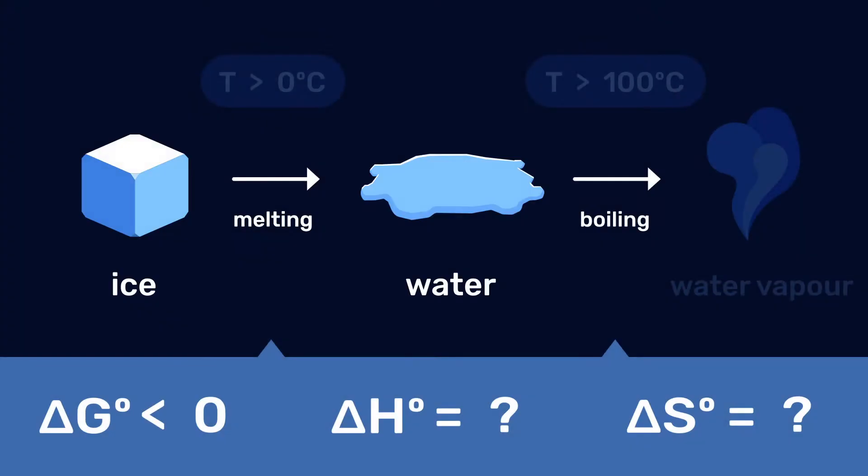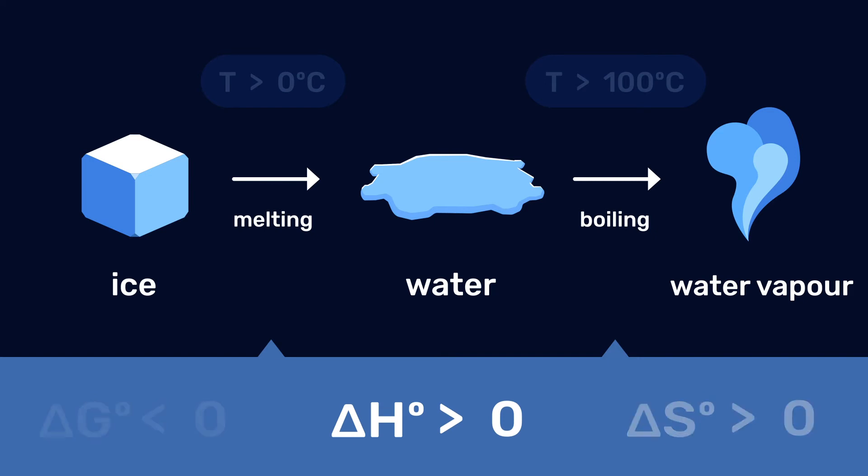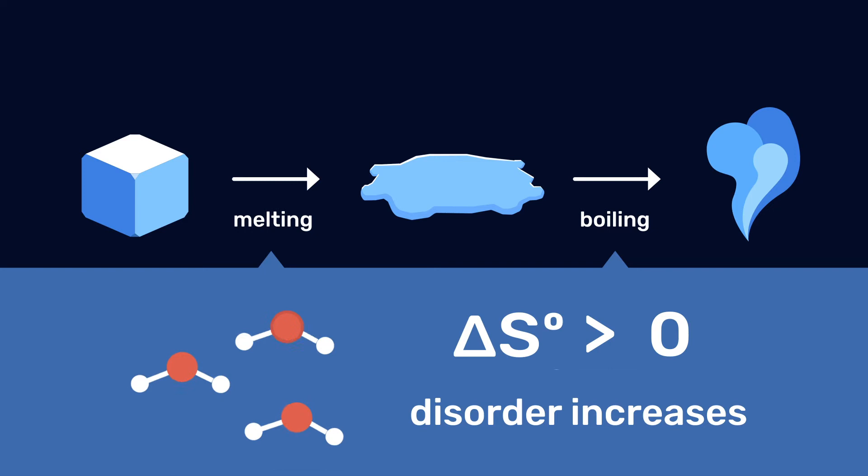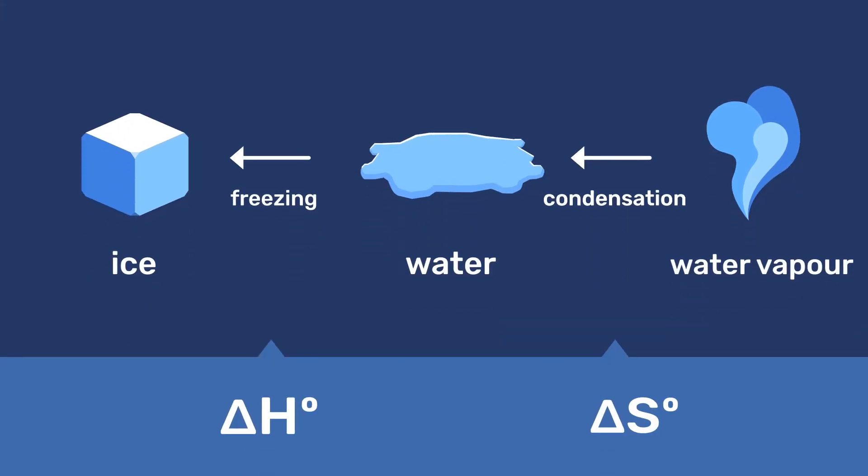For the melting of ice and the boiling of water, both ΔH and ΔS are positive, because in both cases bonds must be broken and the disorder increases. If we consider the reverse reactions, both ΔH and ΔS are negative.